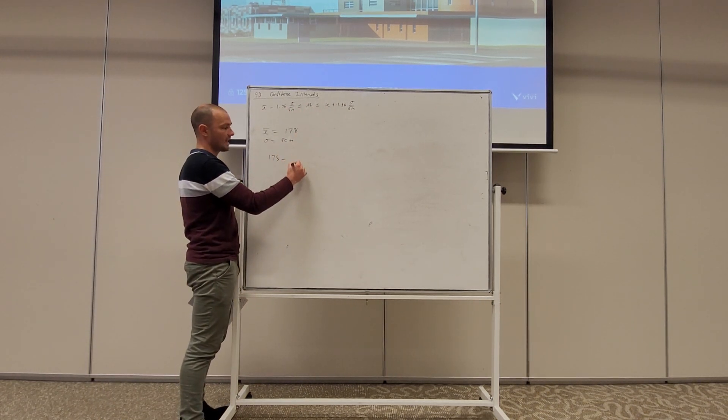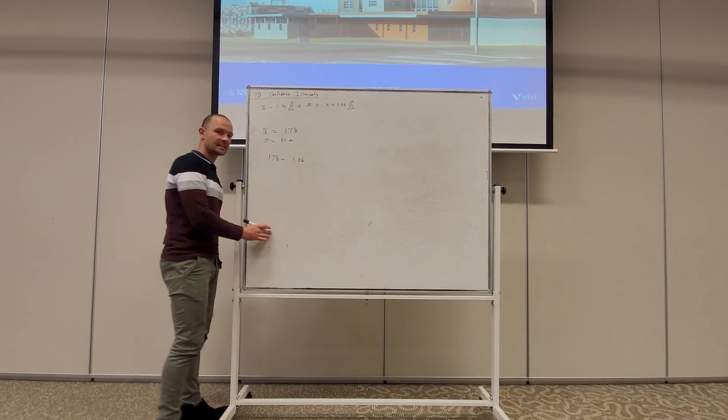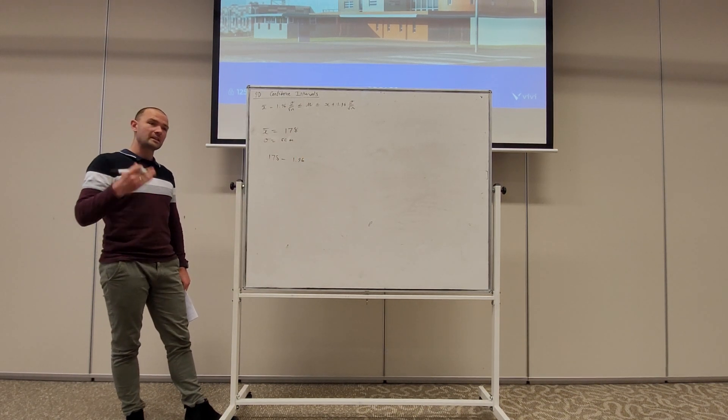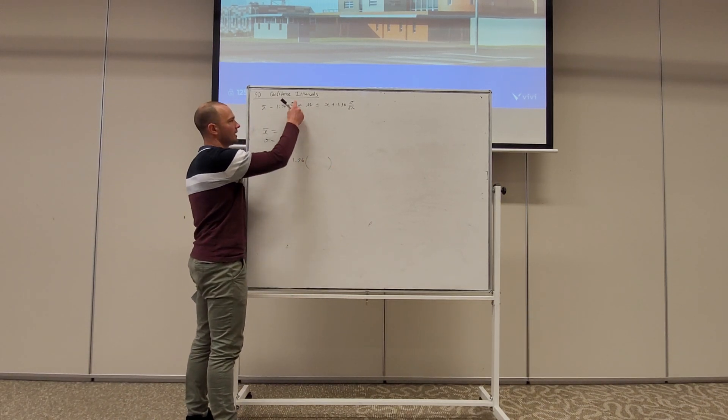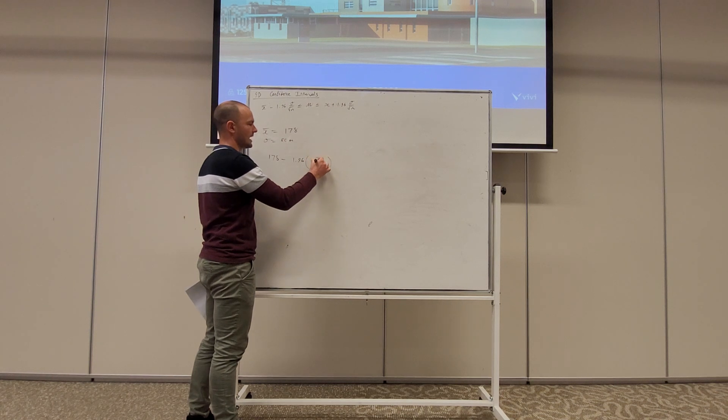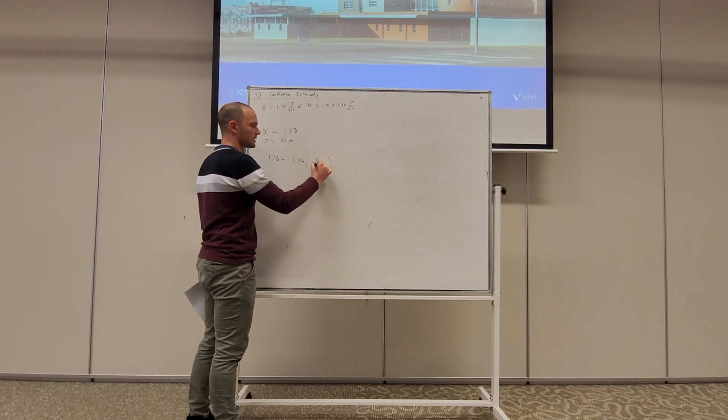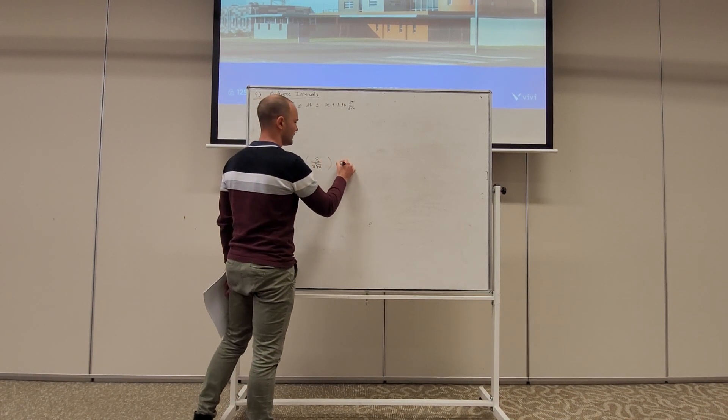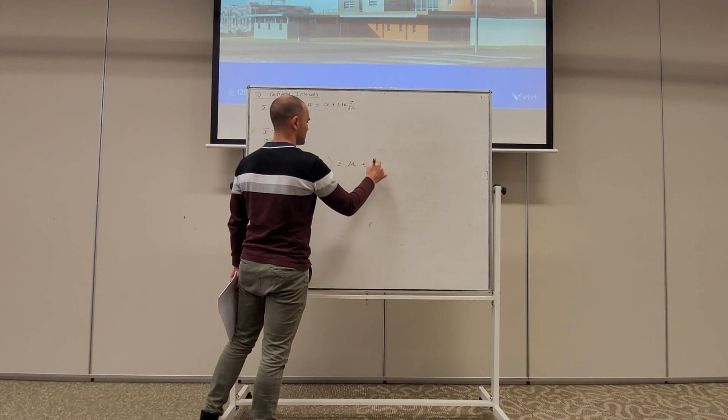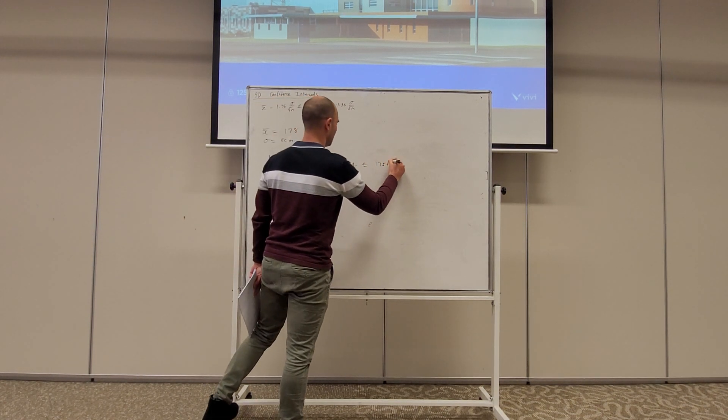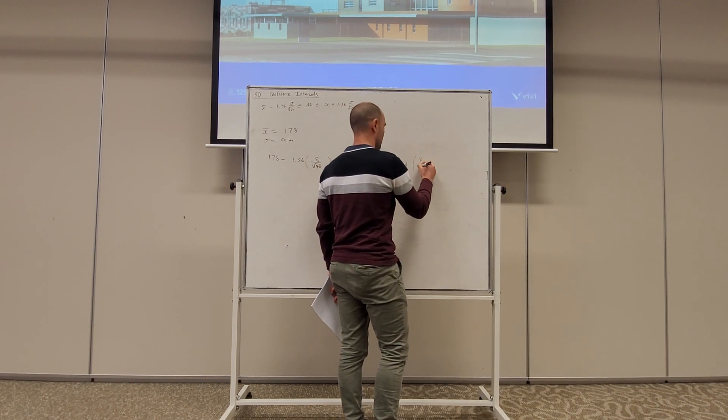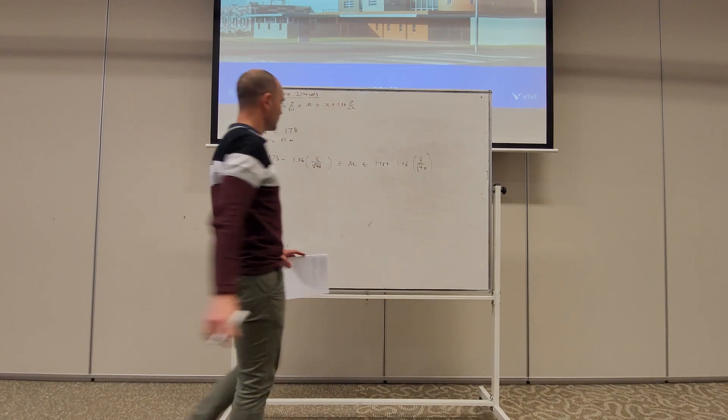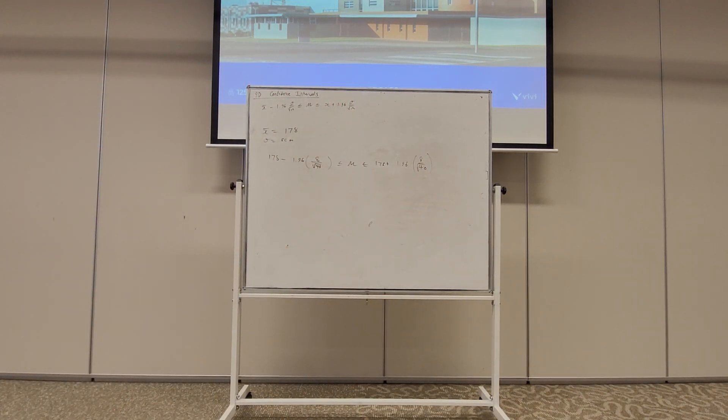So we'll have 178 take 1.96 is always the case for a 95% confidence interval. More to come on that in a moment. And then here we've got sigma divided by the square root of N. So that's 8 divided by the square root of 40 is less than the mean is less than plus 1.96, 8 on the square root of 40. And then all we're going to do is evaluate that. So evaluate the left hand side and evaluate the right hand side.